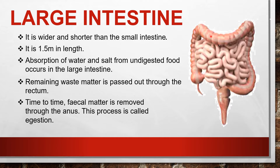The large intestine absorbs water and some salts from undigested food material. The remaining waste matter is passed into the rectum, which is a bag-like structure that collects the fecal matter. Time to time, the fecal matter is removed through the anus, which is the last part of the alimentary canal.